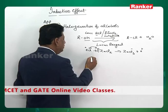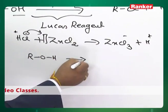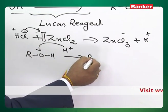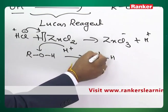That H plus is going to react with ROH. It shows a protonation, H plus attacks on the oxygen and you will get a protonated alcohol.